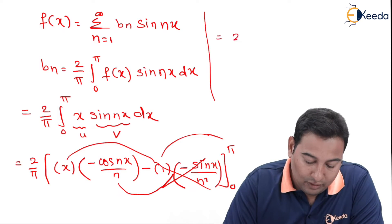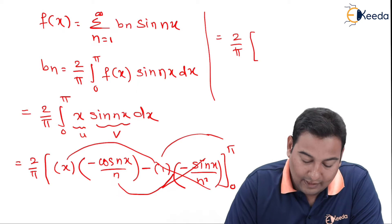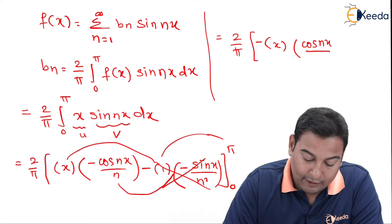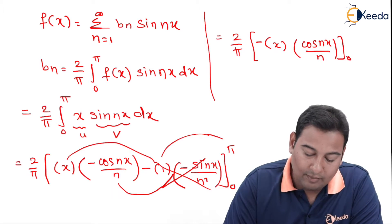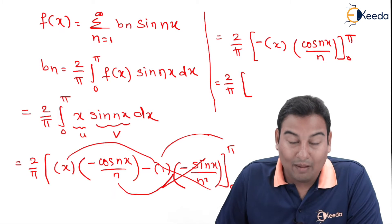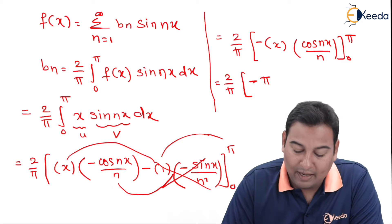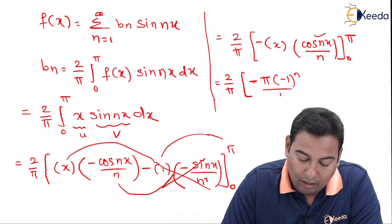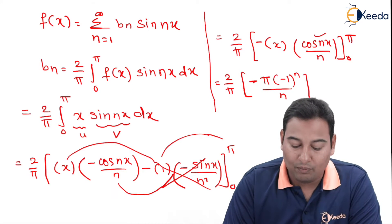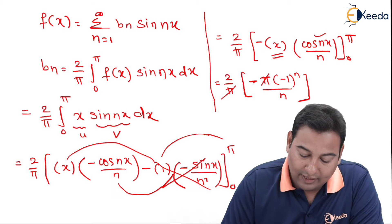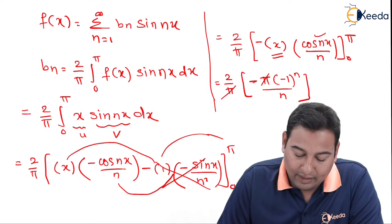We'll be left with 2 upon pi, and inside: minus — taking out — x into cos(nx) upon n, with limits from 0 to pi. Let's substitute upper limit minus lower limit. If we substitute the upper limit it will be minus pi — putting here this will be cos(n pi). cos(n pi) equals minus 1 raised to n, upon n. For the lower limit it is 0, because putting 0 in place of x gives 0. Pi and pi got cancelled.